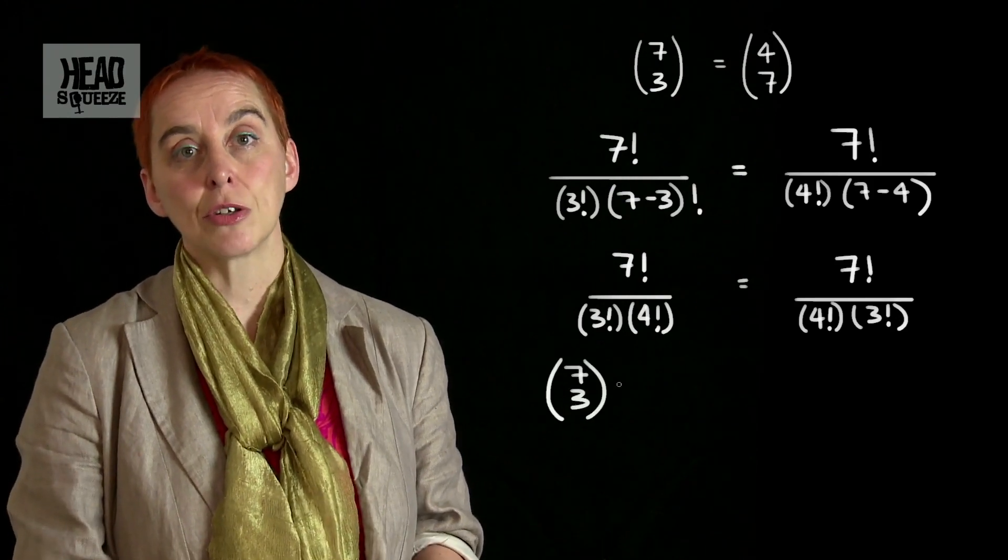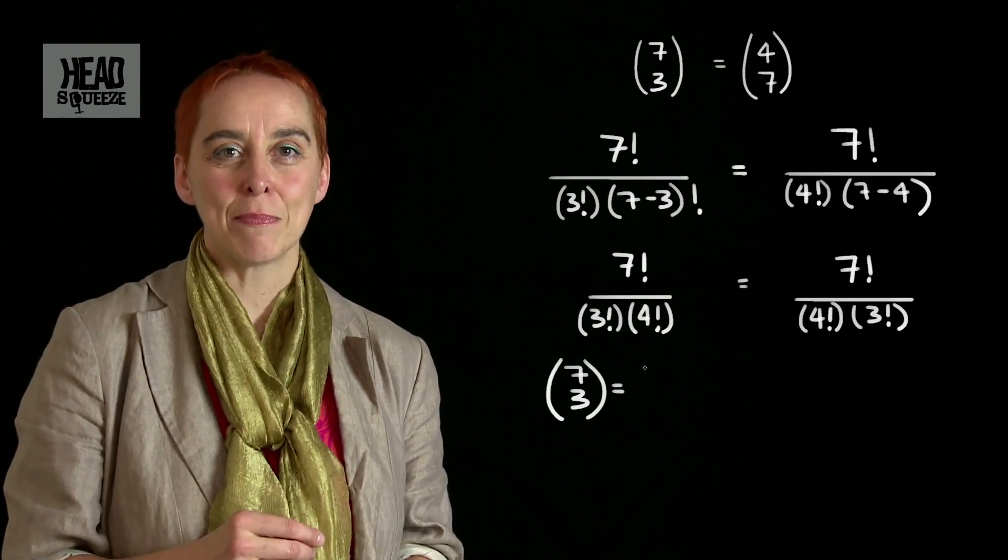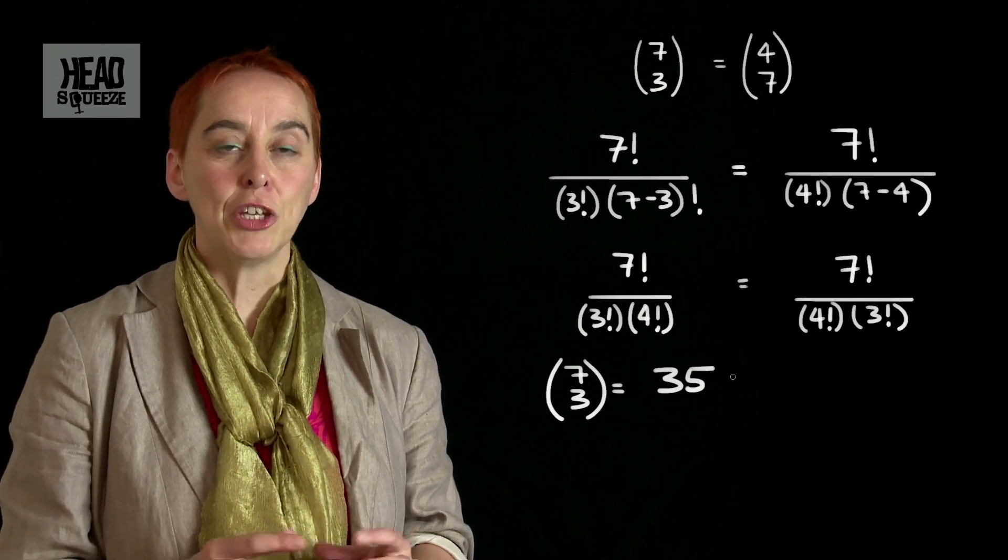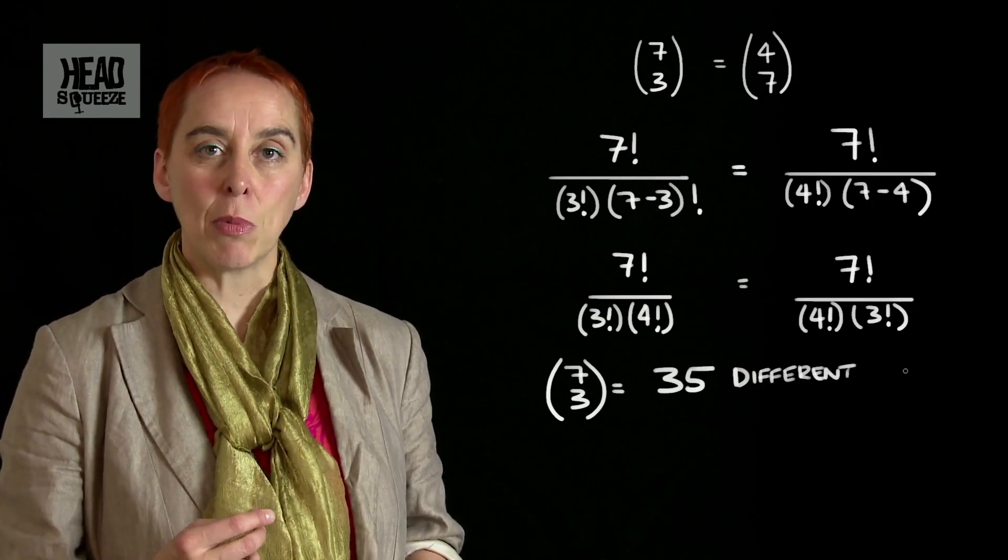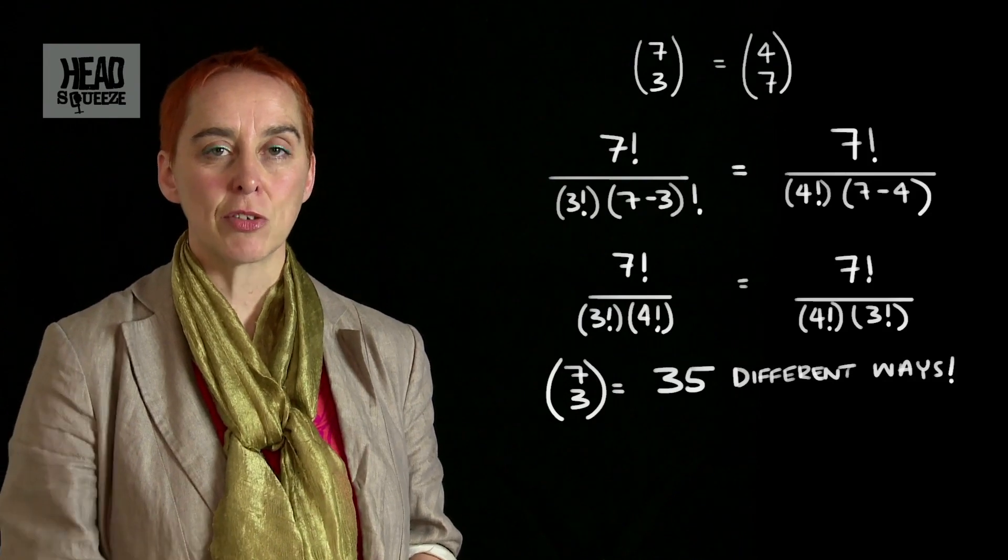35, the answer we've already got. This is sometimes called 7 choose 3, or 7 choose 4, and you get it by having 7 factorial divided by 4 factorial times 3 factorial.